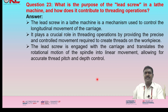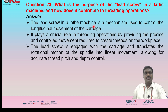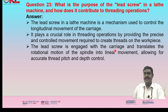What is the purpose of the lead screw in a lathe machine and how does it contribute to threading operations? The lead screw is a mechanism used to control the longitudinal movement of the carriage. It plays a crucial role in threading operations by providing the precise and controlled movement required to create threads on the workpiece. The lead screw engages with the carriage and translates the rotational motion of the spindle into linear movement, allowing for accurate thread pitch and depth control.